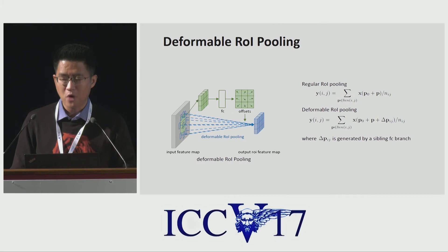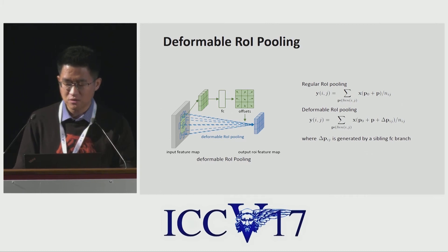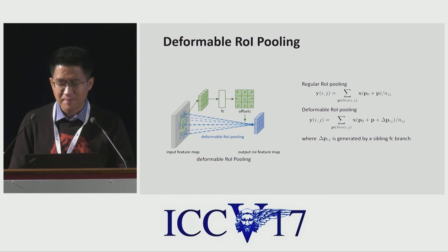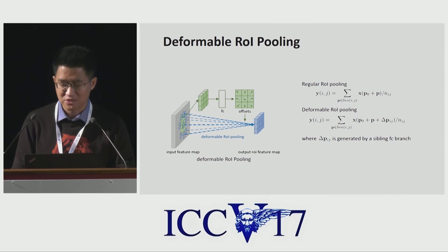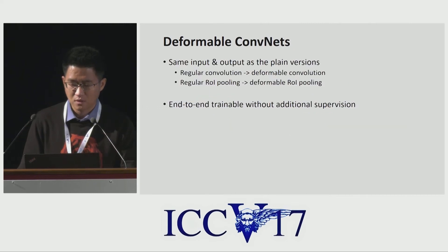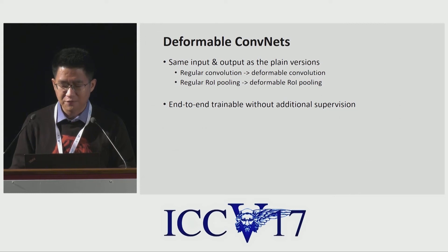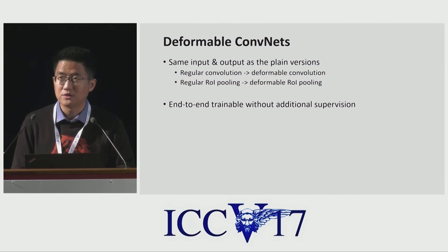The second is deformable ROI pooling. It adds an offset to each bin position in the regular bin partition of the previous ROI pooling. Similarly, the offsets are learned from the preceding feature maps and the ROIs, enabling adaptive part localization for objects with different shapes. Both modules are lightweight, adding only a small amount of parameters and computation for offset learning. They can readily replace their plain counterparts in existing CNNs. In training, the added convolutional and fully connected layers for offset learning are initialized with zero weights and trained via backpropagation through bilinear interpolation operations.